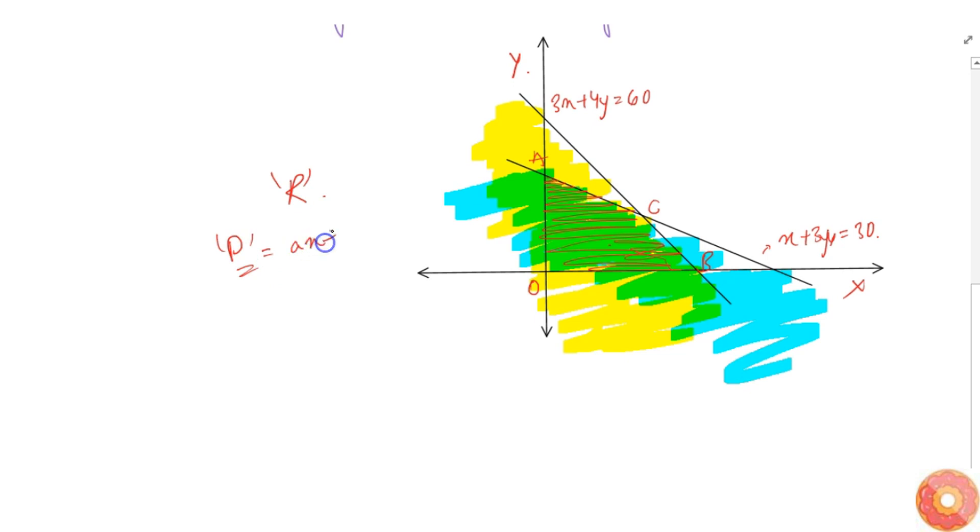If you need to maximize or minimize this thing, then we will find the maximum minimize at the corner points of the bounded region R. Corner points are simply A, O, C, and B.